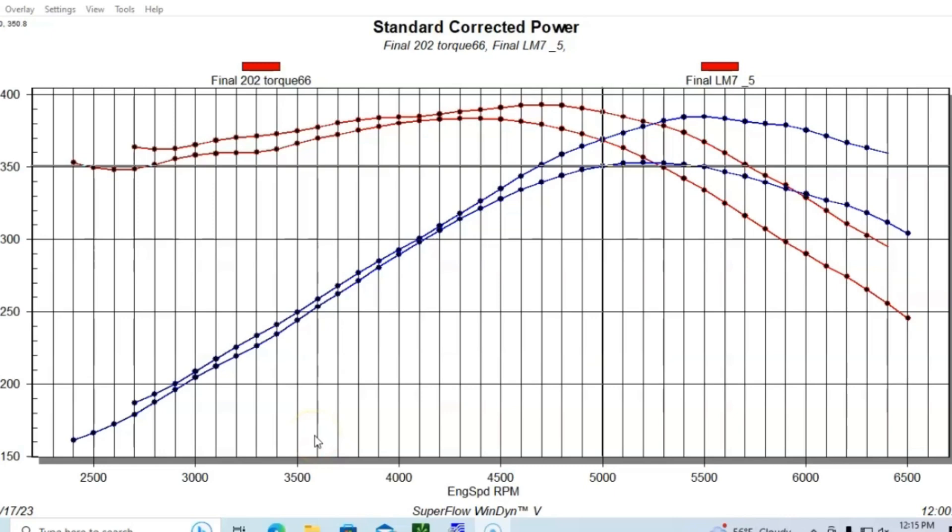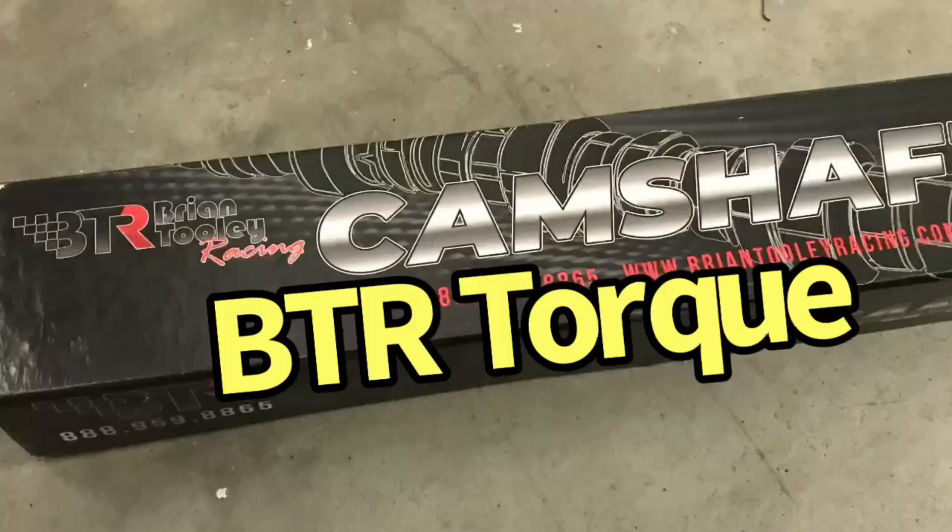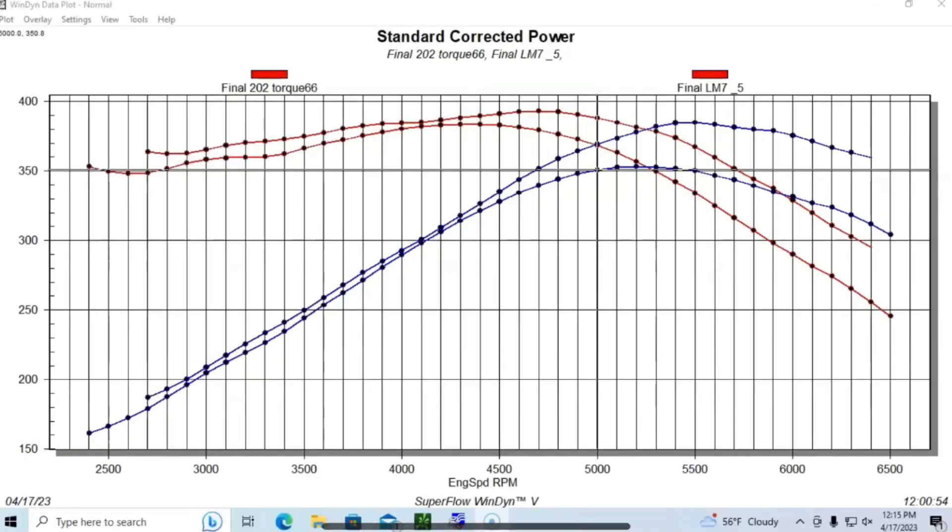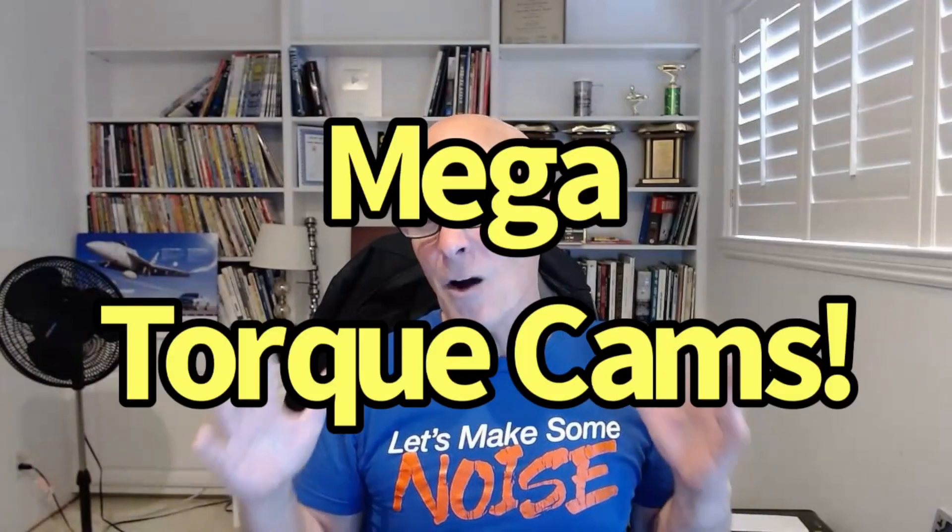Can you actually get low speed torque from a cam swap? We know we can get peak torque - we do that all the time. We can raise the peak torque number and peak horsepower number. But can we get all the gains that we see on the top and shift that over to get giant torque gains on the bottom? The answer really is no.